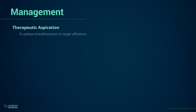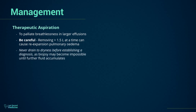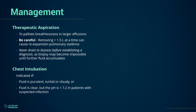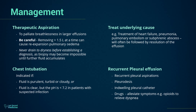Management. Therapeutic aspiration may be required to palliate breathlessness in larger effusions, but removing more than 1.5 litres at a time is associated with a small risk of re-expansion pulmonary oedema. An effusion should never be drained to dryness before establishing a diagnosis, as biopsy may become impossible until further fluid accumulates. Chest tube insertion is indicated if the fluid is purulent, turbid or cloudy, or if the fluid is clear but the pH is less than 7.2 in patients with suspected infection. Treatment of the underlying cause — for example heart failure, pneumonia, pulmonary embolism or subphrenic abscess — will often be followed by resolution of the effusion. In case of recurrent pleural effusions, options include recurrent aspiration, pleurodesis, indwelling pleural catheter, or drug management to alleviate symptoms, for example opioids to relieve dyspnea.